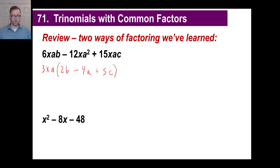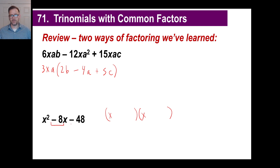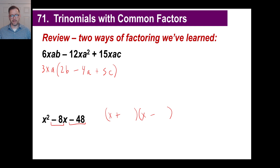The second way, which we did last time, was factoring trinomials. We need two numbers — we just put x here and x here — and the puzzle is: the two numbers add up to give you negative 8, and they multiply to give you negative 48. If it multiplies to give you a negative, you know one's positive and one's negative. Factors of negative 48 that also add to give you negative 8? The answer is 4 and negative 12. 4 times negative 12 is negative 48, and 4 plus negative 12 is negative 8.